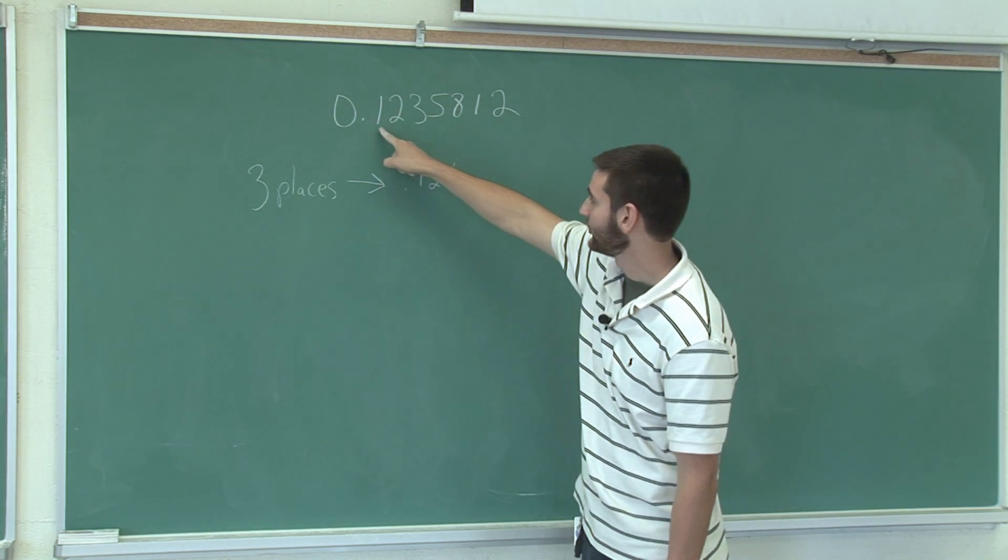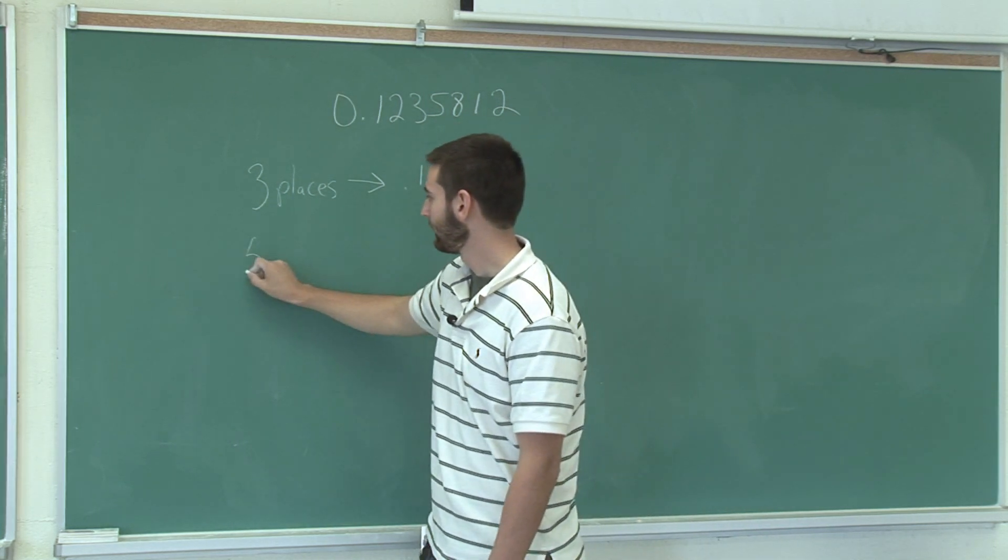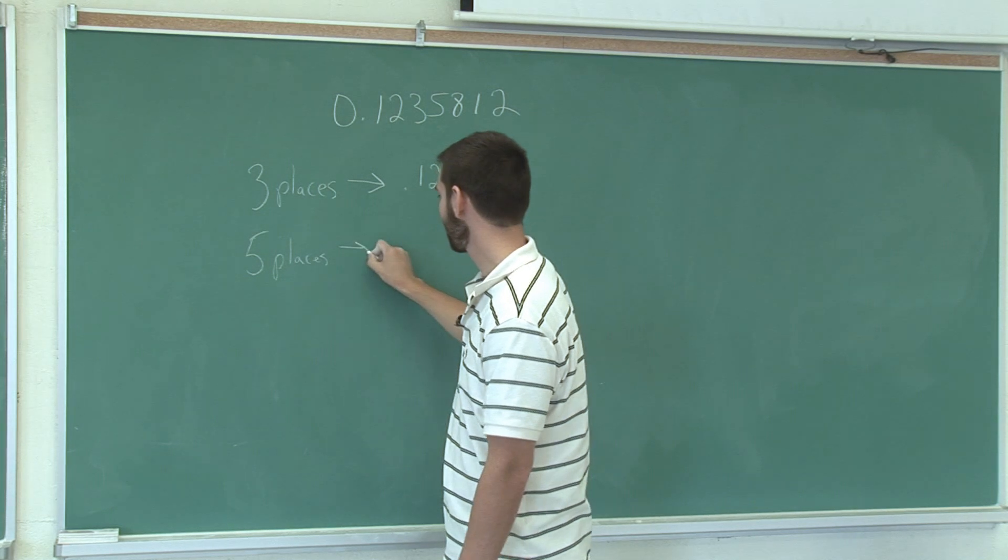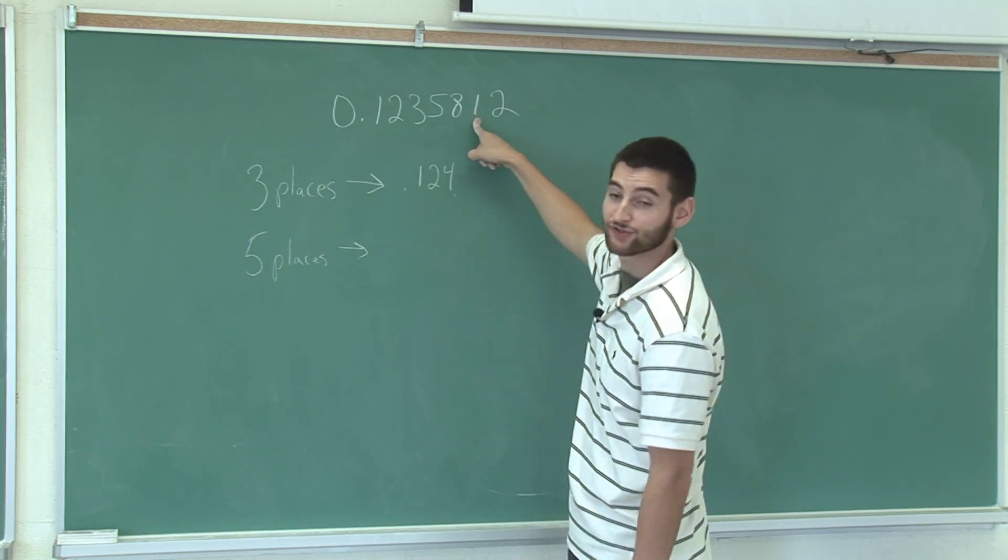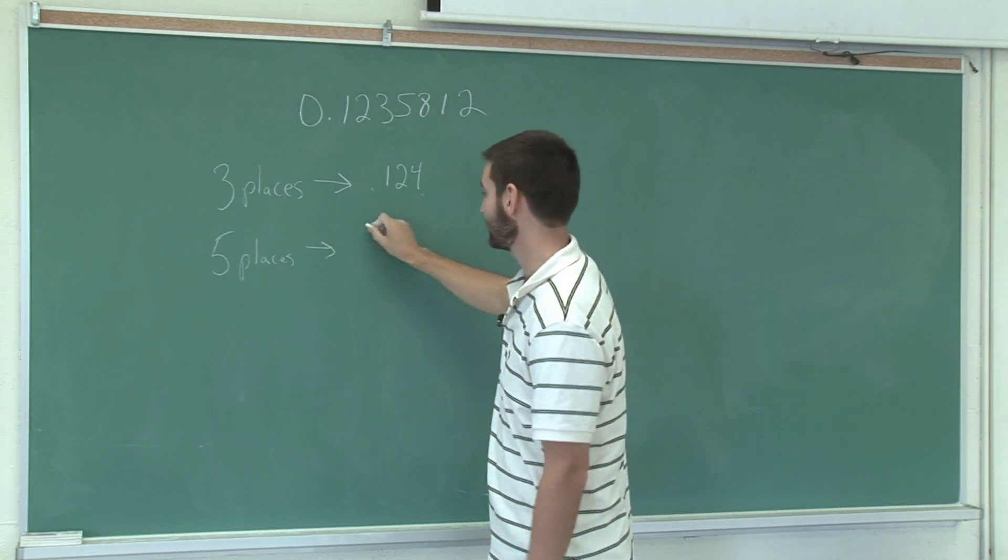If I want to round to one, two, three, four, five places, I look at the next digit, which is a one, which is not great enough for us to round up. So, we're going to keep the eight the way it was.